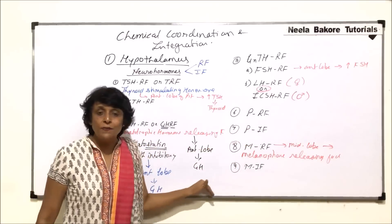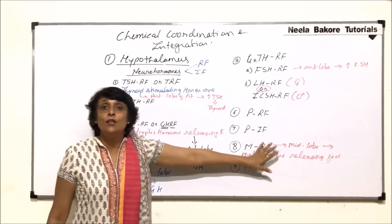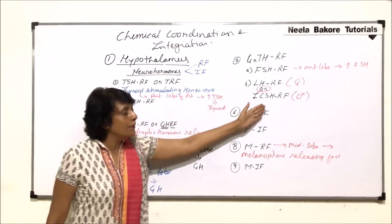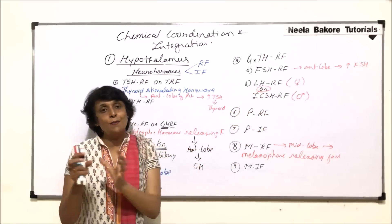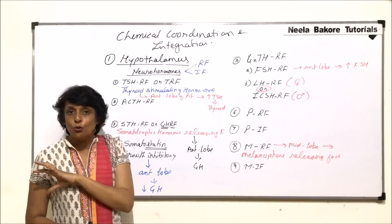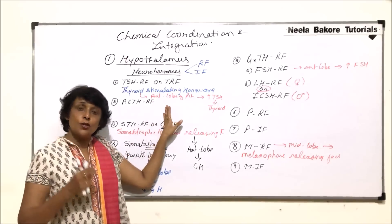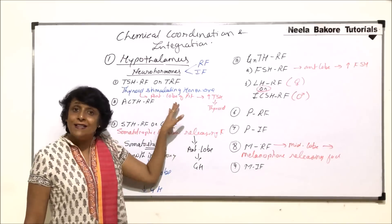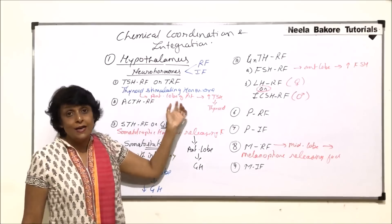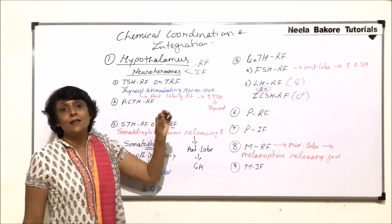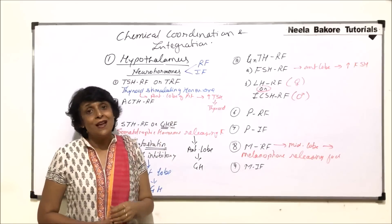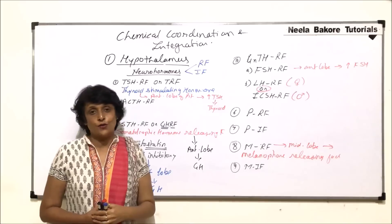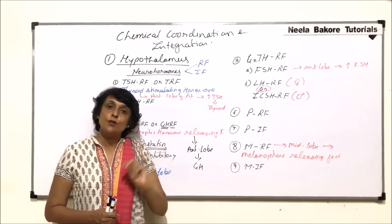All the neurohormones from the hypothalamus are stimulating the pituitary gland, and the pituitary in turn regulates other glands like the thyroid. Ultimately, the pituitary governs all other endocrine glands, making it the master gland. However, the instructions come from the hypothalamus, which is not a pure endocrine gland — it is a part of the nervous system, acting as a link between the nervous system and the endocrine system.